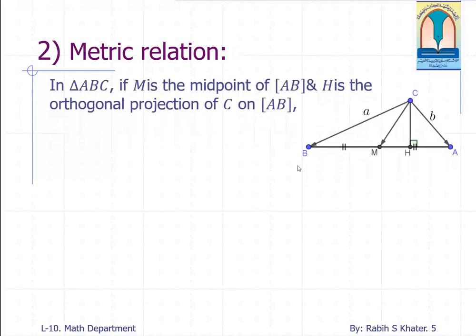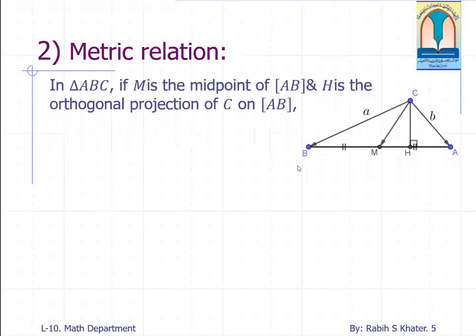Metric relation. In triangle ABC if M is the midpoint of segment AB and H is the orthogonal projection of C on AB, then please help me find the difference between the squares of the vectors A and B. Yes, you know this from before. It is nothing but the difference of the two vectors dot the sum of the two vectors.